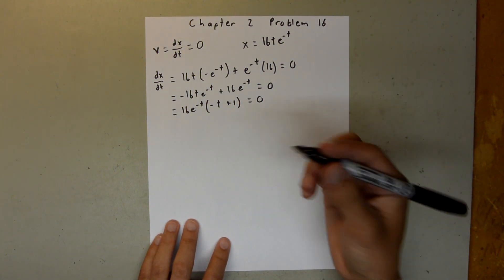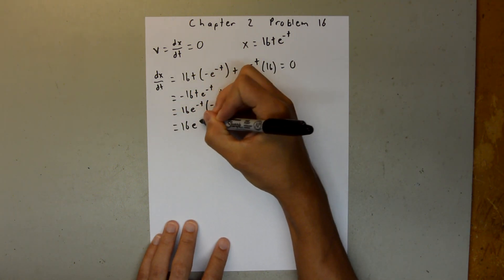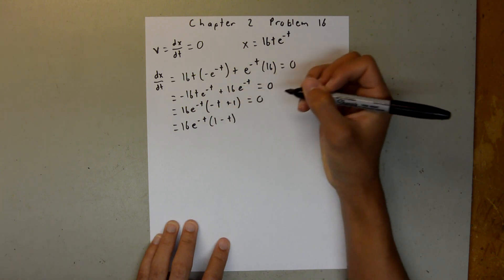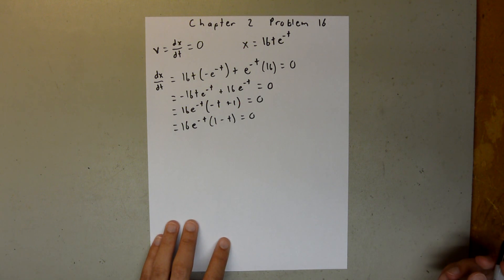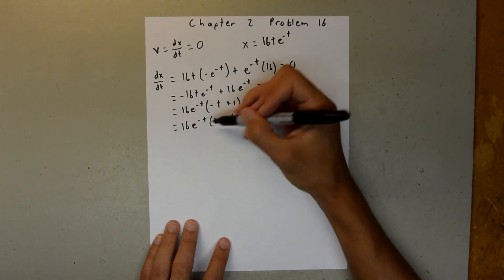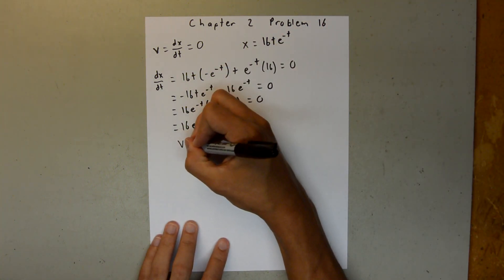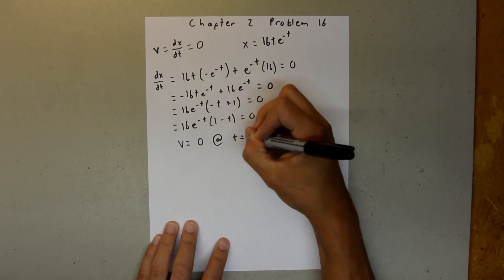And then I just want to rearrange this, so this looks a little nicer, and I'll say 16e to the negative t, times 1 minus t, is equal to 0. And as you can see, in order to make this 0, t has to equal 1, so then this will be 0, and when you multiply 0 times this, that will be 0. So v equals 0 at t equals 1.